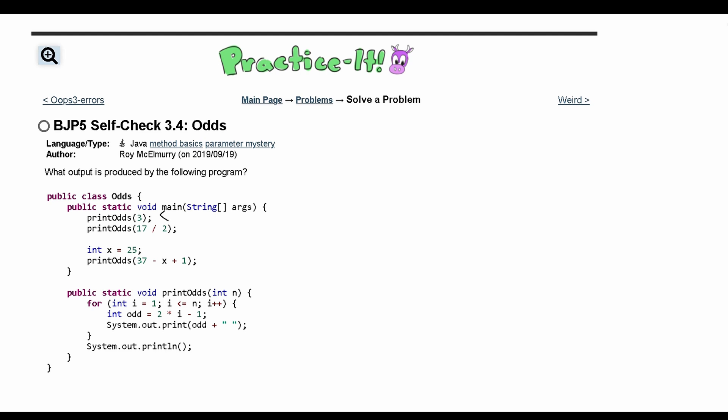First thing that we look at is this printOdds(3), so we're passing in 3 here. We have a for loop that's going to iterate three times. The first time it iterates we have i equals 1 and then we're going to print out odd. Our odd is going to equal 2 times i which will be 2 minus 1, so we get odd is equal to 1, so we're going to have 1 and then a space.